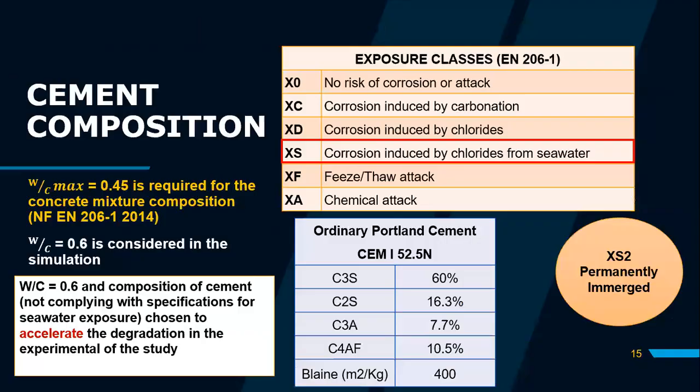For the cement composition, we used ordinary Portland cement, the composition of which is shown in the table. According to European norms, seawater is classified as class XS, and permanently submerged microstructures are class XS2. The maximum water-to-cement ratio is 0.45. However, to accelerate the degradation in the experimental study, we used a water-to-cement ratio of 0.6 with ordinary Portland cement.